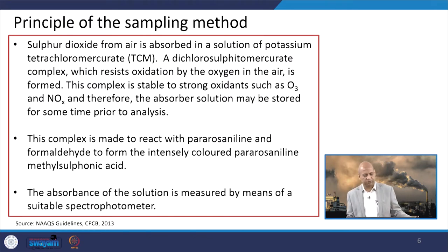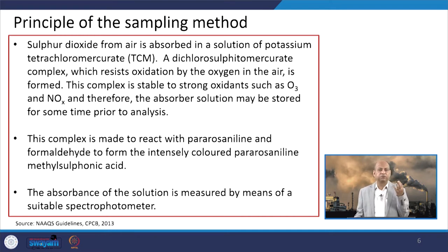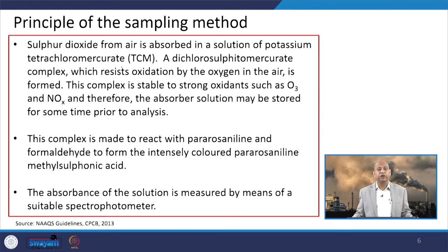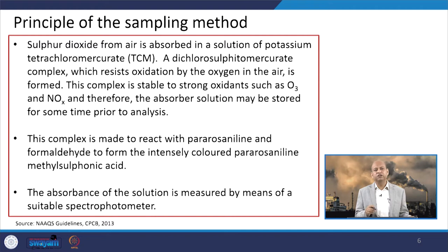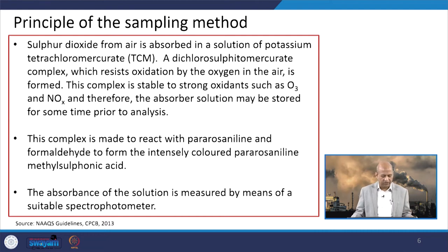The principle used for sampling of SO2 is based on absorption in a solution of potassium tetrachloromercurate, which we call TCM in brief. This chemical resists oxidation from other compounds like ozone or NOx, so those kinds of interferences can be removed easily. This makes it a good procedure. The solution is made with certain chemicals like formaldehyde and others, and at certain steps we use different kinds of reagents and chemicals.